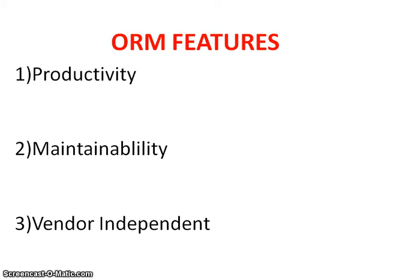Whenever we write code for save in JDBC, we need to explicitly map each column to the database and write a lot of boilerplate code. With ORM — taking Hibernate as an example — we have a simple save method which saves the object to the database, handling however many columns we need to populate. ORM significantly reduces the development time and takes care of mapping Java objects with the relational database.